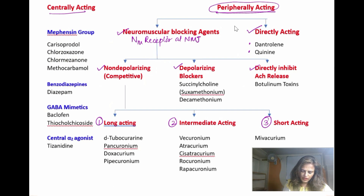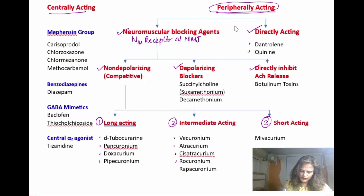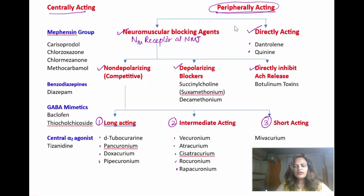Under long-acting non-depolarizing blockers, we have four drugs: d-tubocurarine, pancuronium, doxacuronium, and pipecuronium. Intermediate-acting agents include vecuronium, atracurium, cis-atracurium, rocuronium, and rapacuronium. Short-acting includes mivacurium.